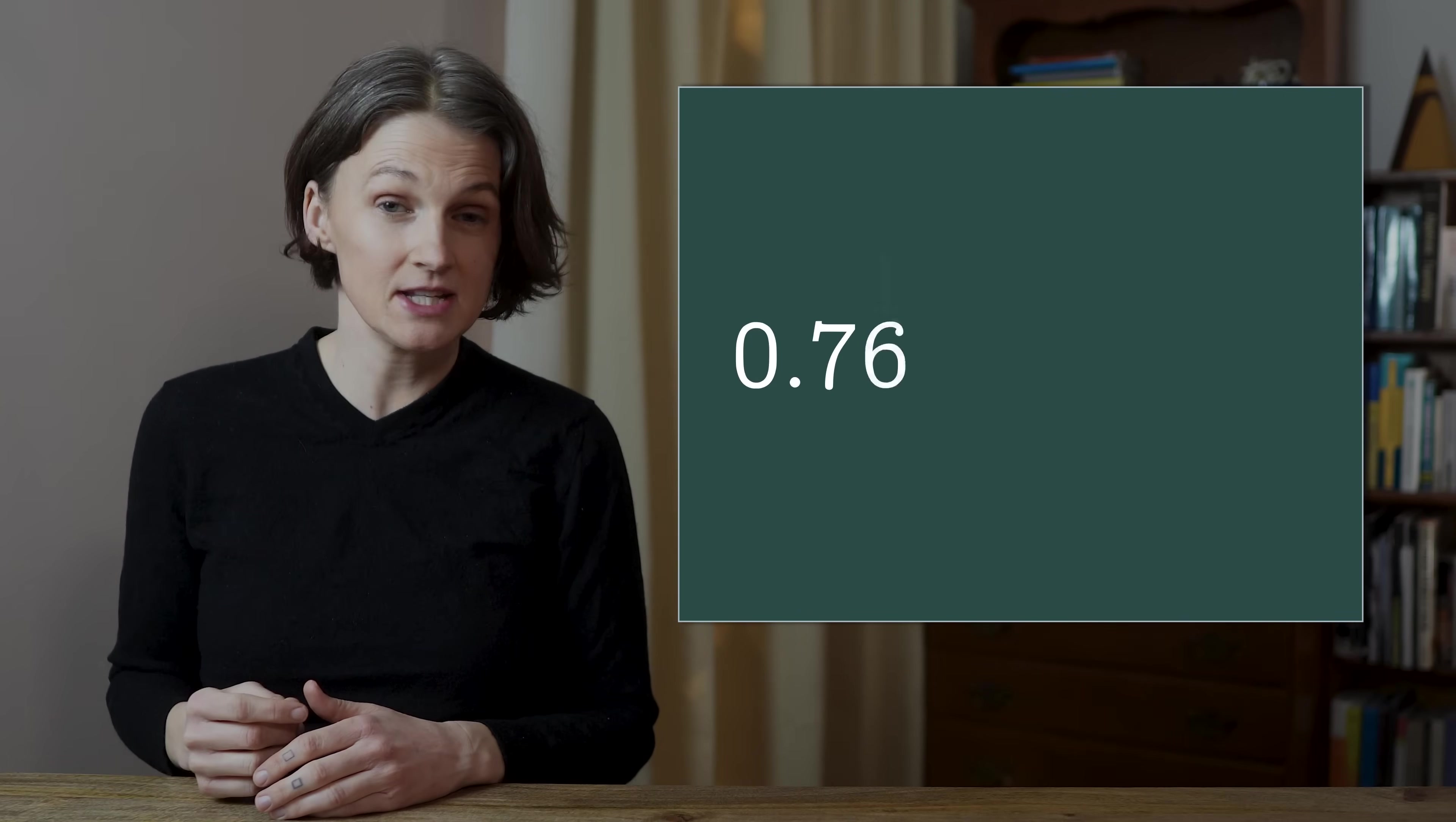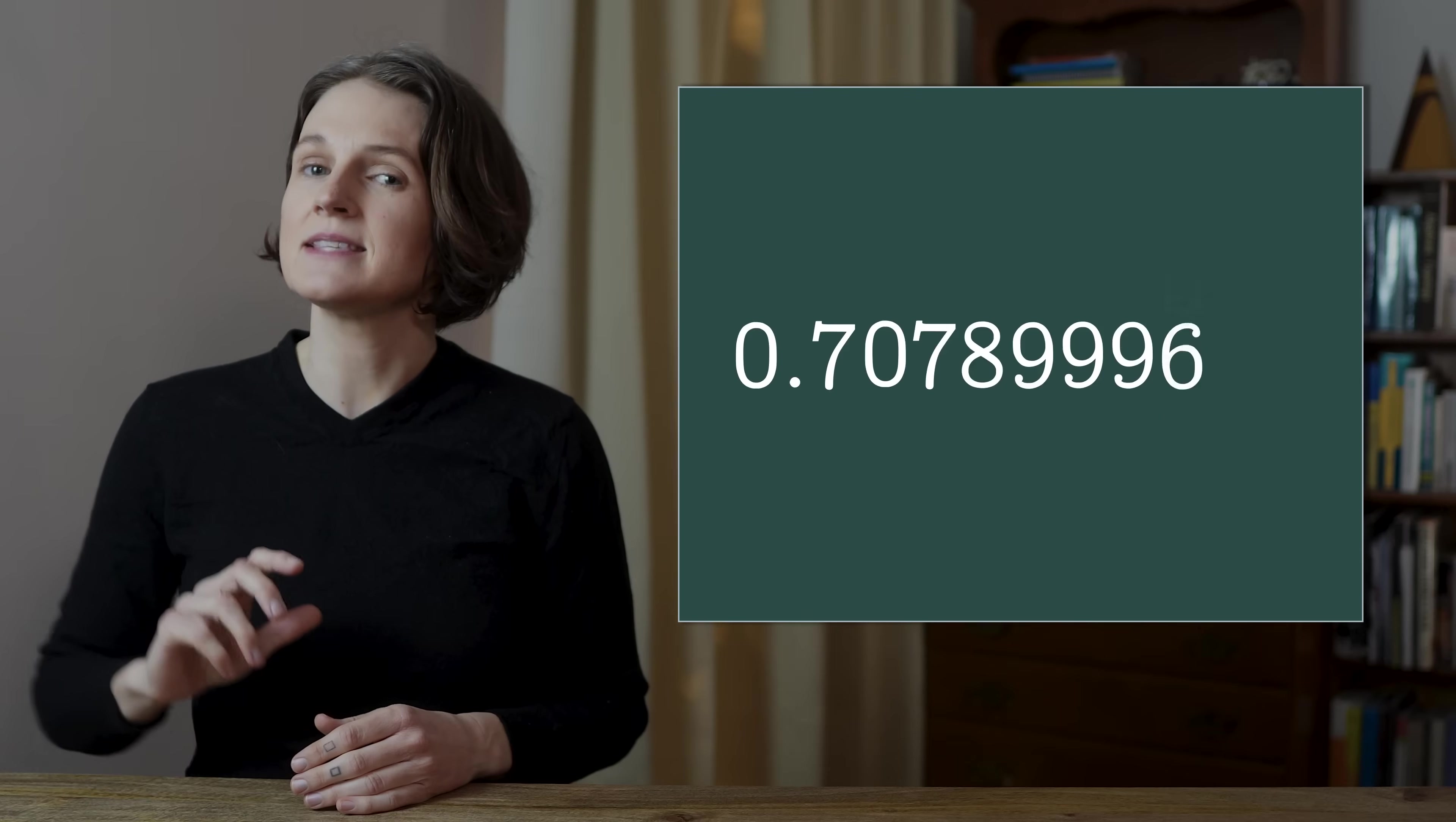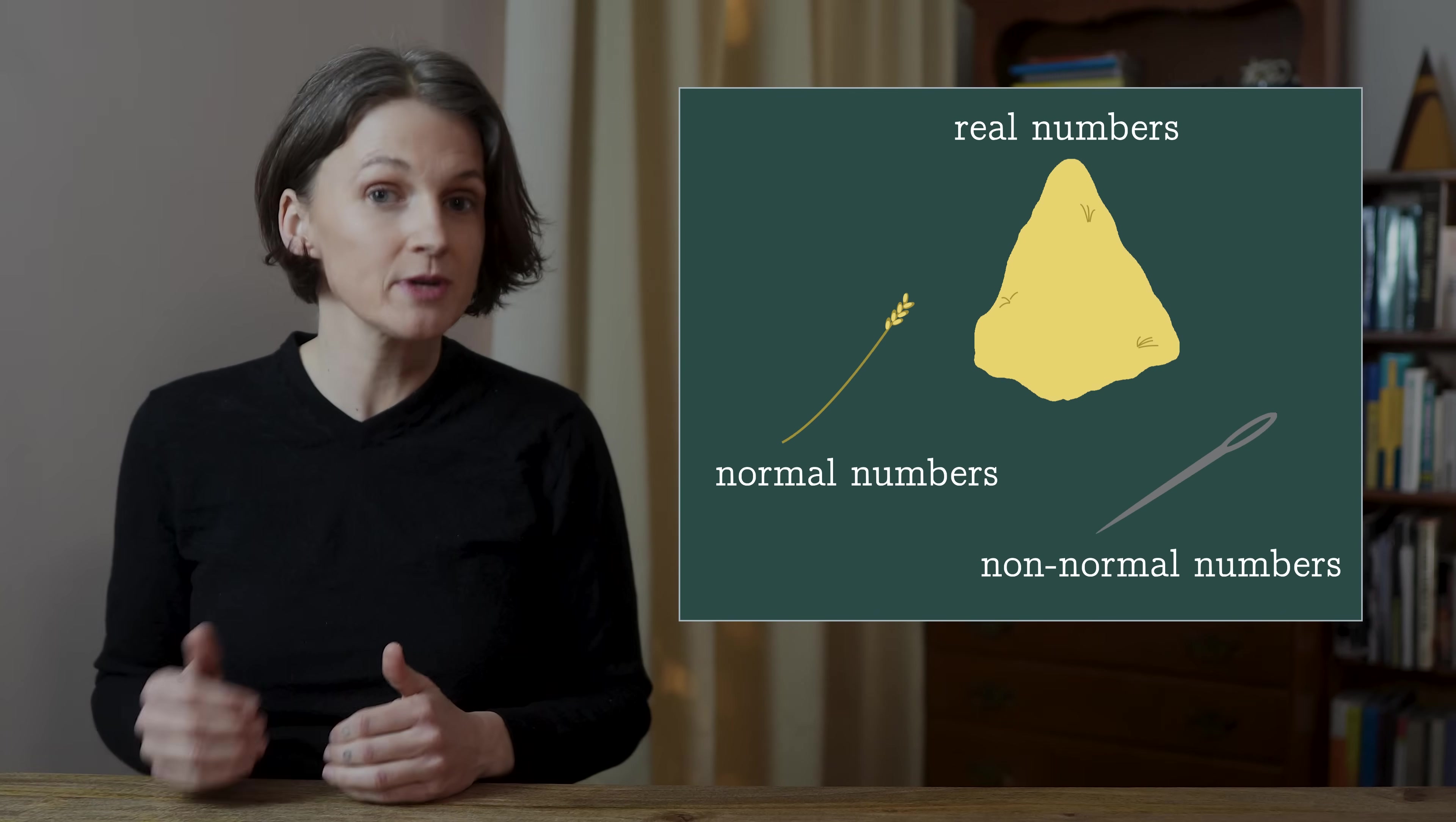In a normal number, the digits, and all sequences of digits, appear equally often, which makes these numbers look completely random, as if each digit were generated by rolling a 10-sided die. The normal numbers are almost everywhere in the real numbers.